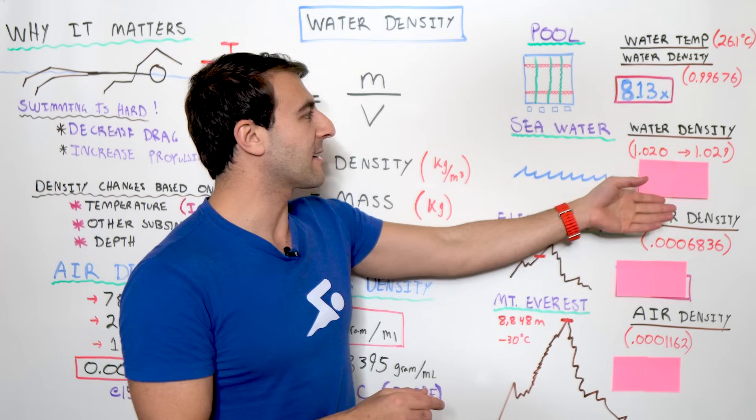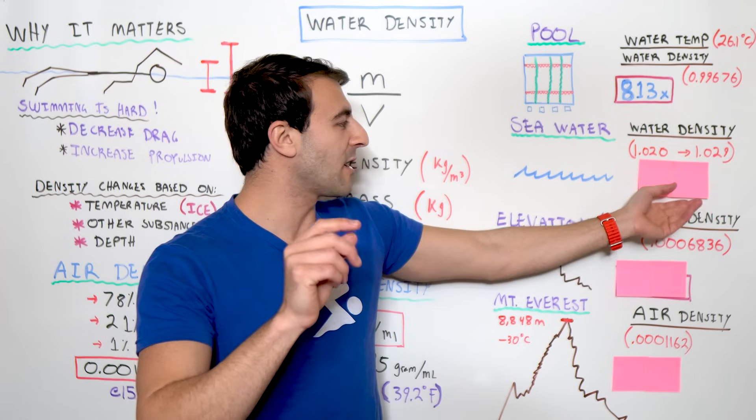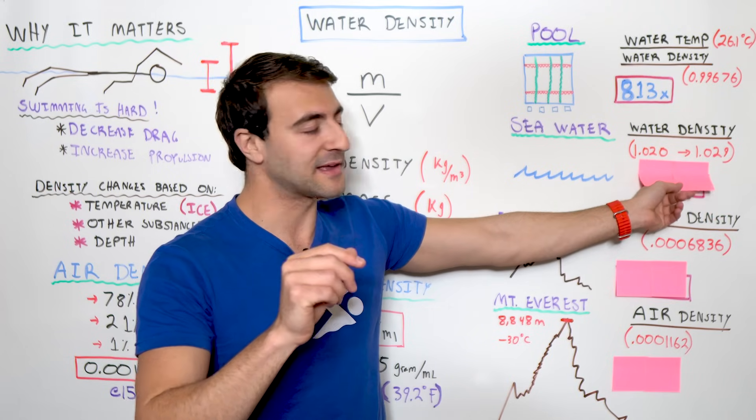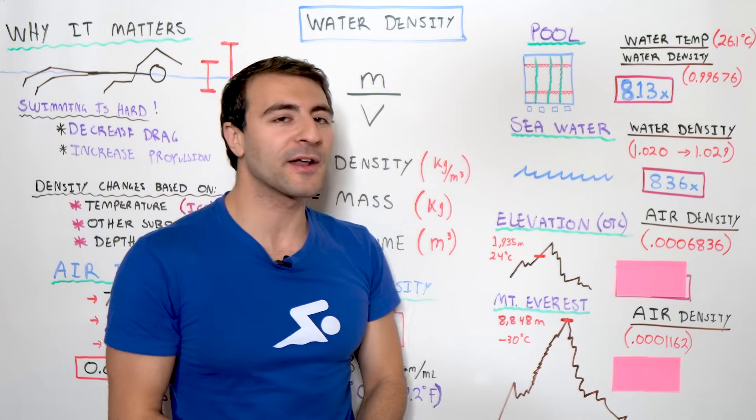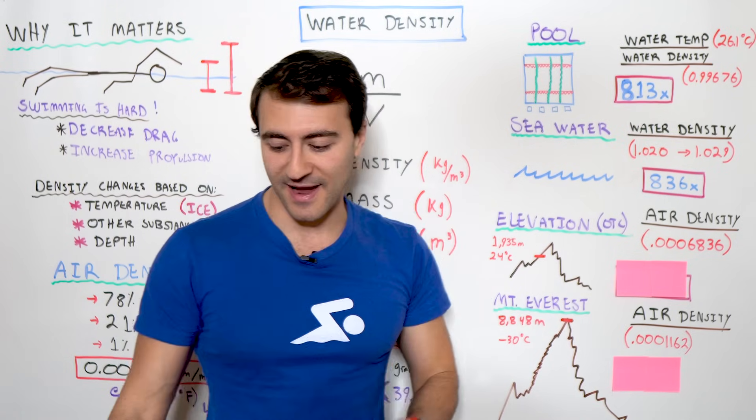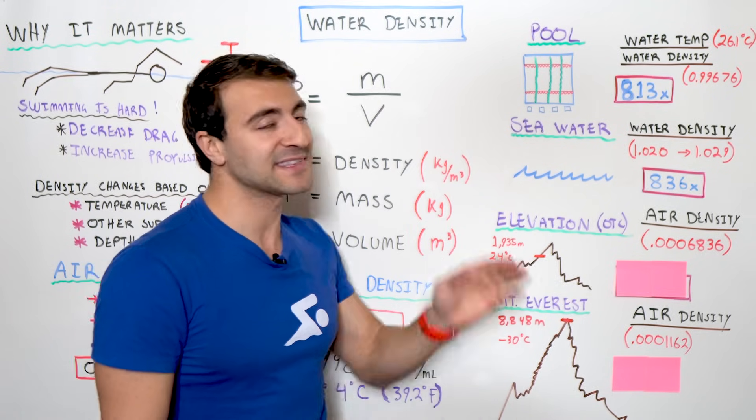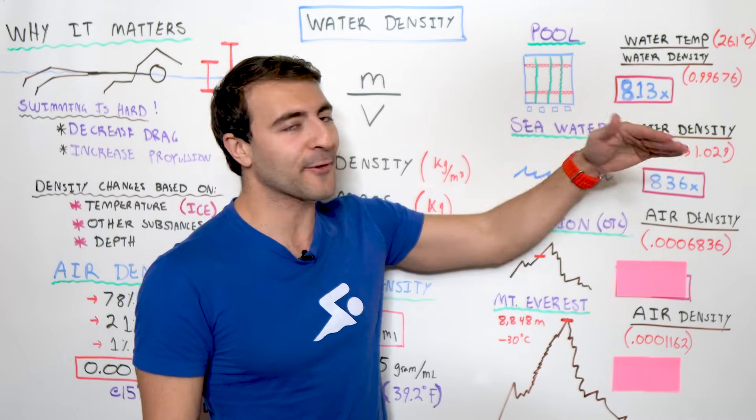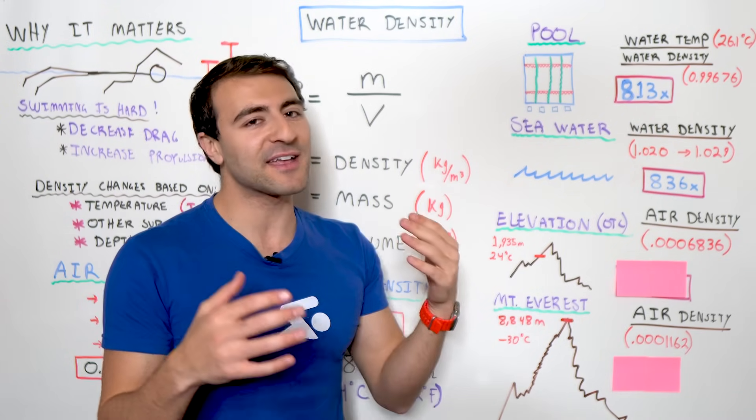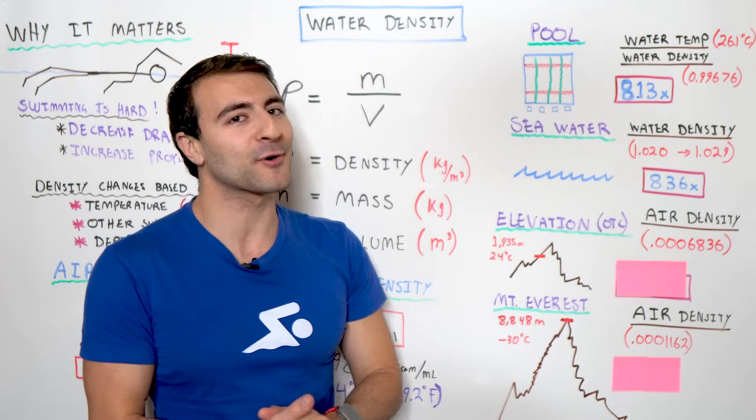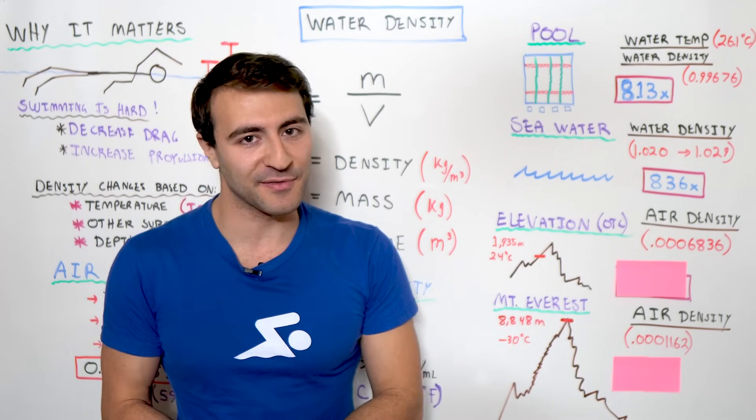So, if we peel back the layers, how much more dense is water? And in seawater, at least, water is 836 times more dense than air. It's not 800, but we're starting to drift further and further away from that 800 number where it is a generalization, but it starts to get really interesting when you get up to altitude.